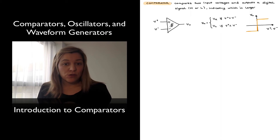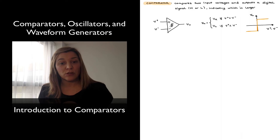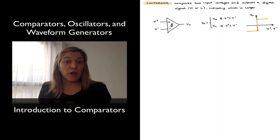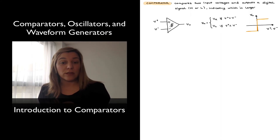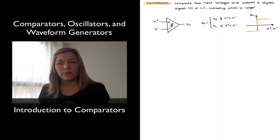Typical applications of comparators: since they're comparing two input signals, sometimes you will have one of those signals be a reference signal and the other be the actual input signal, and they're going to be used for event detection — to see whenever that input signal crosses that particular threshold of the reference signal. Because of their binary output, they are going to be used in analog-to-digital conversion or data conversion applications. They can also be used for waveform shaping, such as converting a sine wave into a square wave or generating a square clock from a sinusoidal waveform.